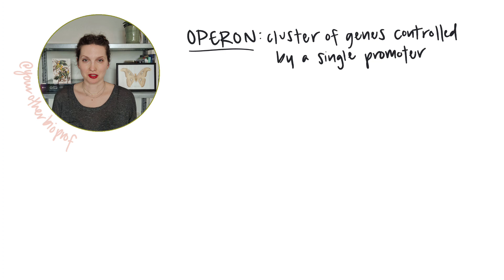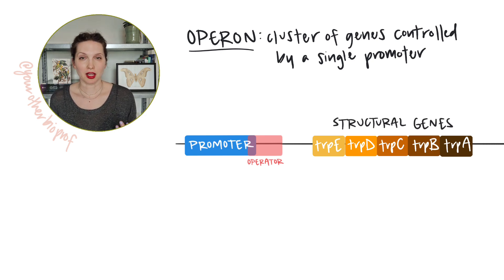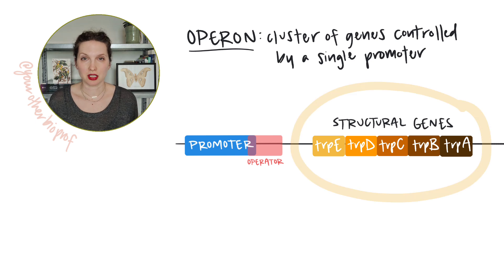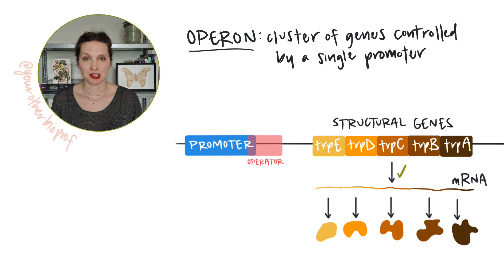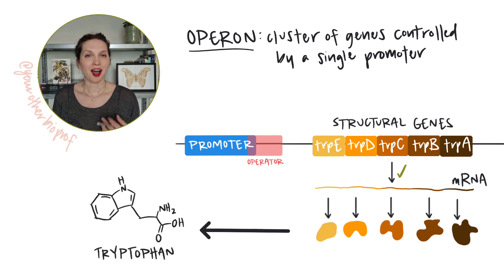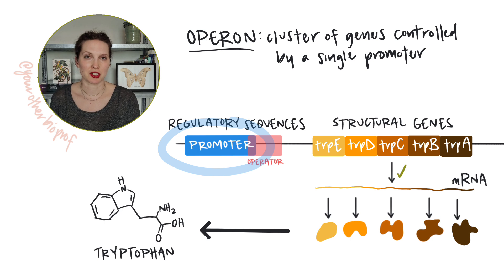Remember that an operon is a cluster of genes organized together and controlled by a single promoter. That means that the genes are either transcribed or not transcribed together. For the trp operon in E. coli, there are five genes that are part of this cluster. They are transcribed to make a single mRNA that is translated to produce five different enzymes involved in the production of the amino acid tryptophan. Other sequences on the operon act as signals for regulation, allowing proteins to bind and turn transcription on or off based on cellular conditions. Upstream of the structural genes, you'll find the promoter — that's where RNA polymerase will bind in order to initiate transcription.